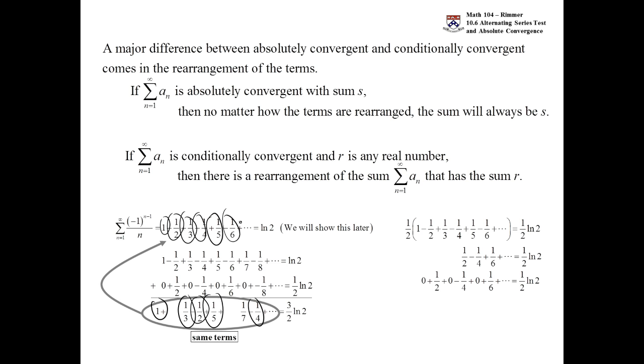So wait a minute. On the one hand it's log two, but on the other hand it's three halves log two. And so anyway, this is the idea. When you're conditionally convergent, strange things like this happen.